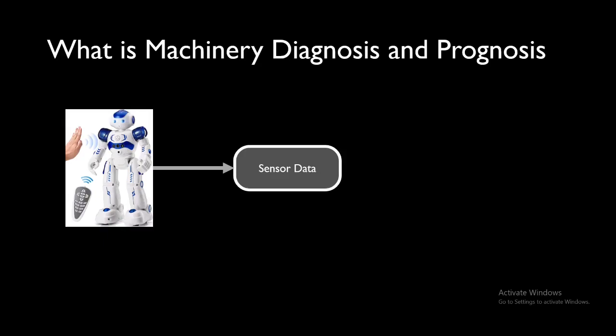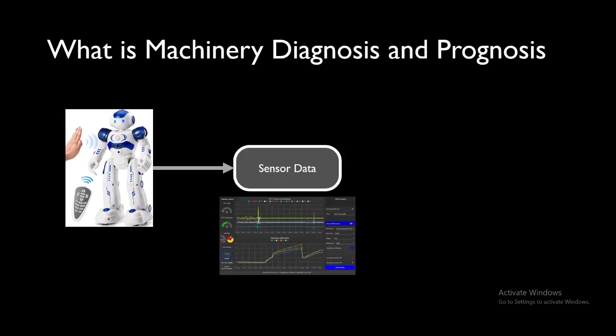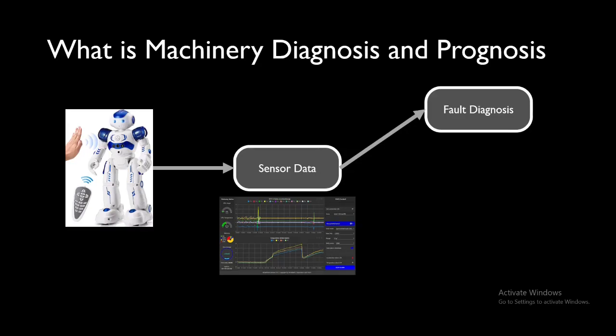First we need the sensor data or the condition data, which can be current data, vibration data, oil signature data, and other things as well. We take this sensor data, which can be many sensors at a single time, and then we train our machine learning algorithm.